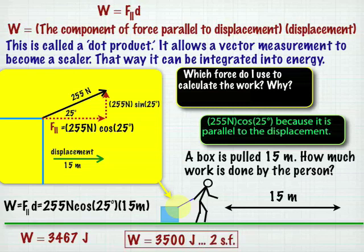Which, if we're looking at sig figs, would be 3,500 joules. That's with two sig figs. So now we've got the basic idea of how to find work when the force isn't parallel to the displacement.